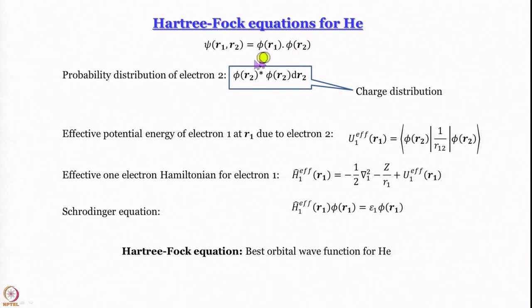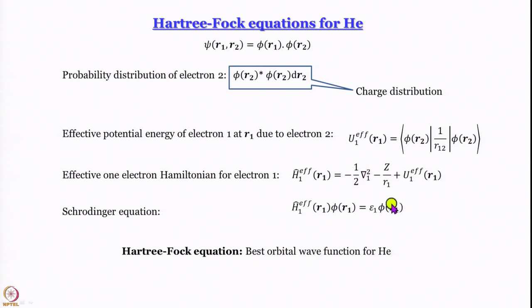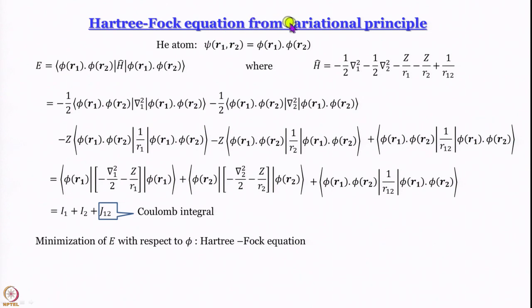You might remember that we constructed the Hartree-Fock equations for the helium atom. Using orbital approximation to start with, we worked out the probability distribution of the electron, which denotes the charge distribution. From there we calculated the expression for effective potential energy of electron 1 due to electron 2, and hence wrote the Schrödinger equation called the Hartree-Fock equation. The epsilon we get — from Koopmans theorem — is not really energy but ionization energy. We then learned how to do variational treatment of the Hartree-Fock equation, arriving at the Coulomb integral, which we will use extensively when discussing chemical bonding. The Coulomb integral actually comes from many-electron atoms itself.